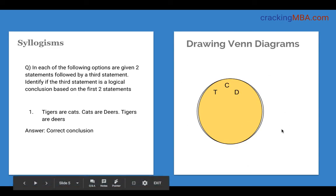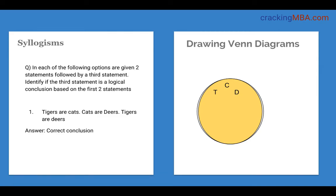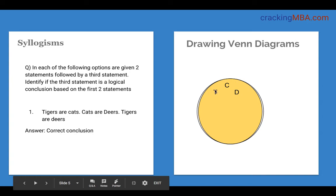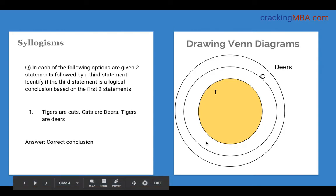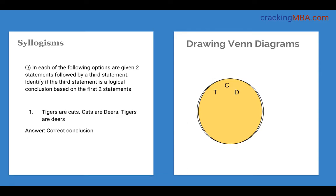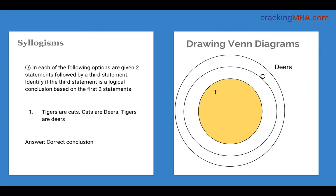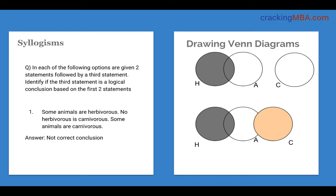Another way of representing this is with a hundred percent overlap. When we say tigers are cats, a hundred percent of tigers are cats; when cats are deers, a hundred percent of cats are deers, and hence a hundred percent of tigers are deers — all three circles overlap. In the nested representation, we cannot conclude all C are T, because some C lie outside T. Similarly, we cannot say all D are C or all D are T. However, in the full-overlap case, all D are C and all C are T because there is a hundred percent overlap.